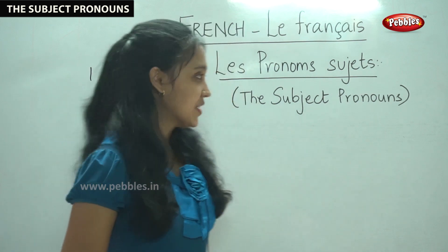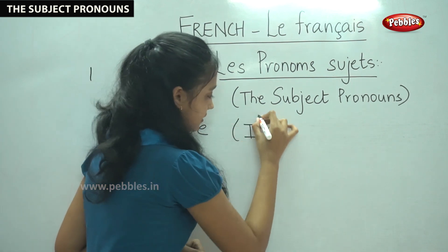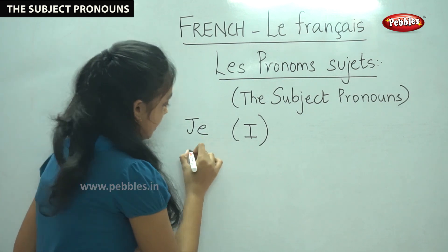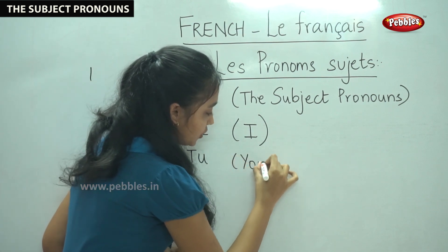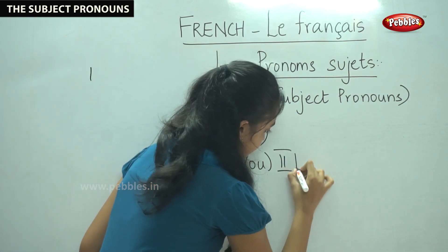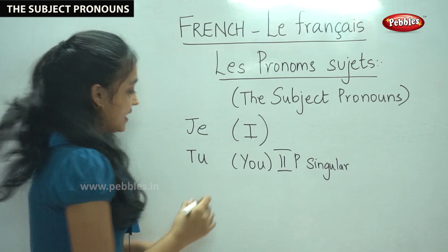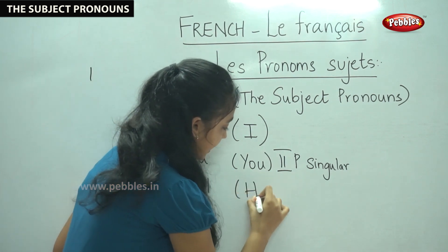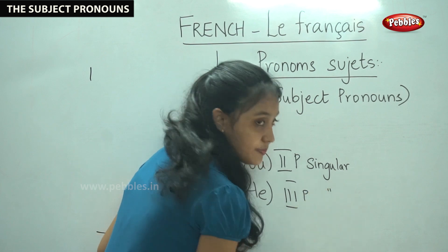Let us see them one by one. The first one is Je. Je means I, so the first subject pronoun is Je. The second one is Tu. Tu means you — it is in the second person singular. The next one is Il. Il means he. It is third person singular masculine.